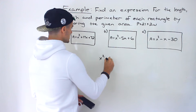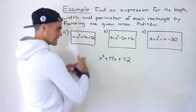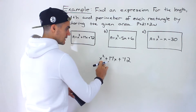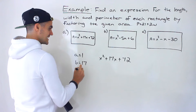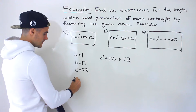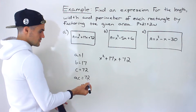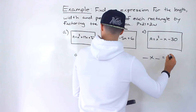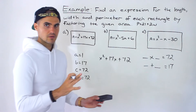Let's start with the first rectangle. We have x squared plus 17x plus 72. We have to factor this by decomposition. Notice we can't take anything out — there's no greatest common factor, no numbers or variables we could take out. So going into decomposition: the A value is 1, the B value is 17, and the C value is 72. AC is 72 times 1, which gives us 72. We find two numbers that multiply to 72 and add up to the B value of 17.